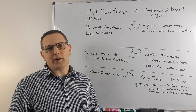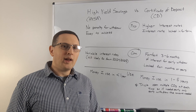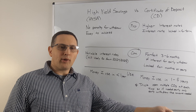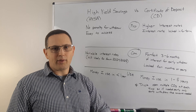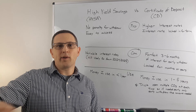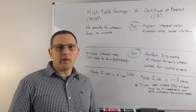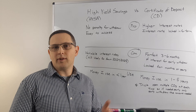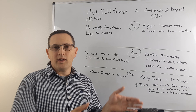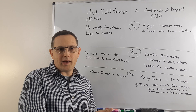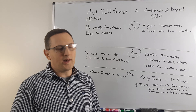So if I ever need to get, say, $5,000 out, I only need to break the $5,000 CD. I don't have to break the other $45,000. That way I'm only forfeiting three to six months of interest on $5,000, not $45,000.